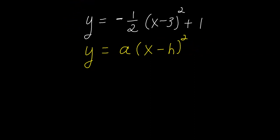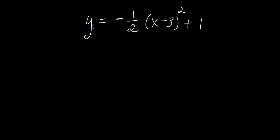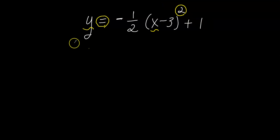Once I've figured that out, I identify the parent function. The parent function includes the y, the equal sign, the x, and the squared. It doesn't include the negative one-half, the minus three, and the plus one — it's just the most simple part of the function. So I'm going to write the equation y equals x squared off to the side here.